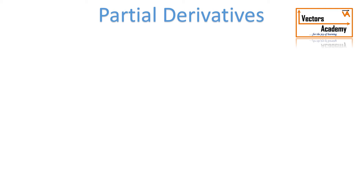Today we will have a look at what is a partial derivative. We already know what a derivative is, so let's take an example. Suppose we have to find the derivative of u with respect to x, where u is a function of x and y — an implicit function.